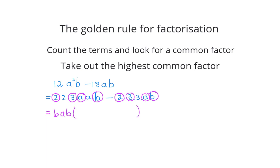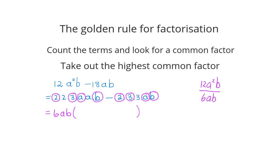The number of terms in the bracket is always the same as the number of terms of the original expression. Now what you need to do is divide 6ab into the first term 12a²b — the answer is 2a. Then you divide 6ab into minus 18ab and the answer is minus 3, or you can see that 3 is the only factor that was not part of the common factors.